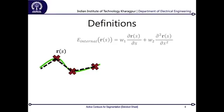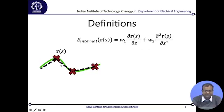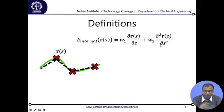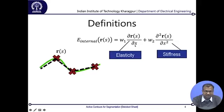At a point r(s), we compute something called internal energy — a weighted summation of the first-order and second-order derivatives along the curve parameter s. The derivative del r / del s is a vector of (del x / del s) î and (del y / del s) ĵ. The first term is called elasticity of the contour; the second term is called stiffness of the contour.